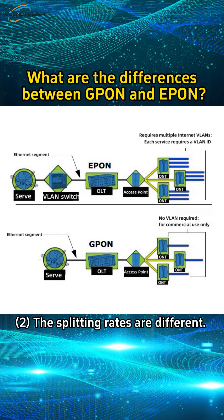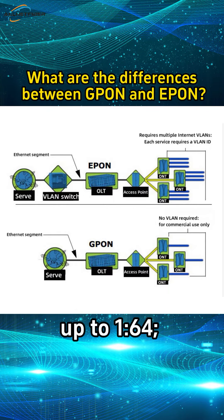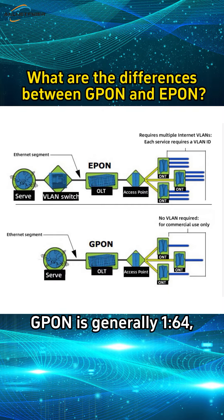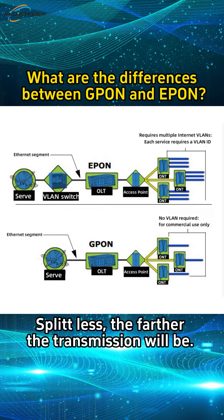Second, the splitting rates are different. EPON is generally 1:32, up to 1:64. GPON is generally 1:64, up to 1:128. The fewer the splits, the farther the transmission will be.